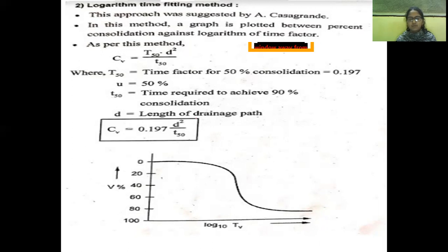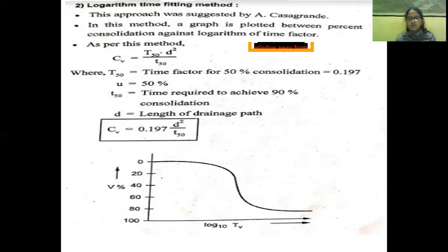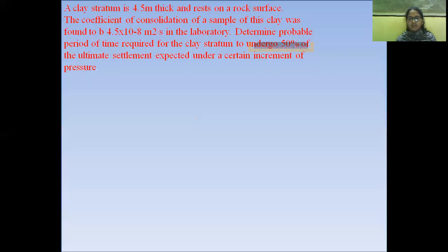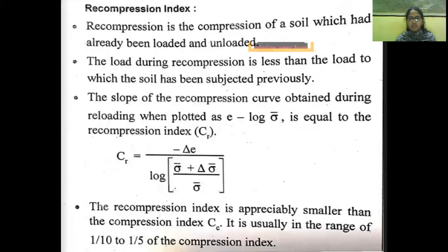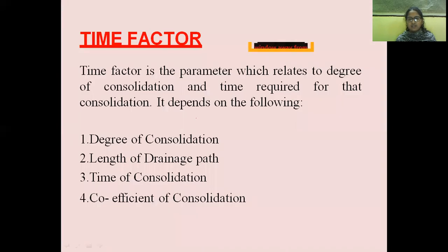This logarithmic approach was suggested by Casagrande. In Unit 1 we discussed Casagrande's apparatus used to determine the liquid limit. These definitions and formulas are used for solving consolidation problems and can be asked in both short answer and long answer questions. These are very important — please remember them. In the next class we will discuss the next topic.